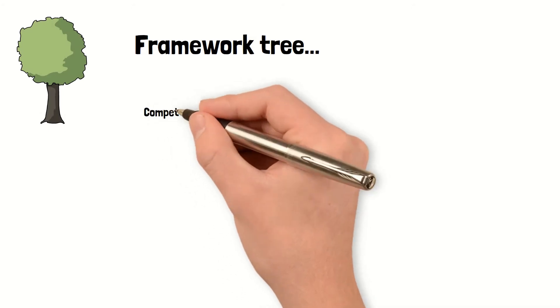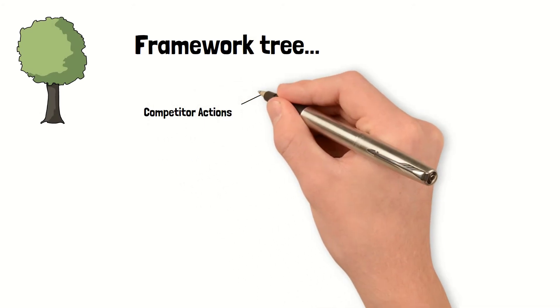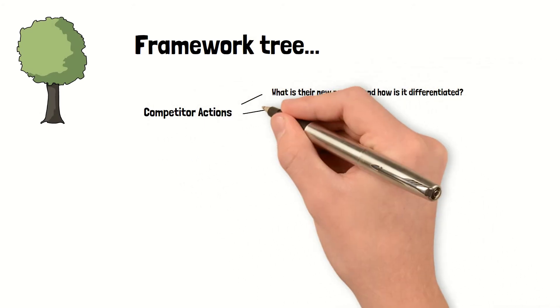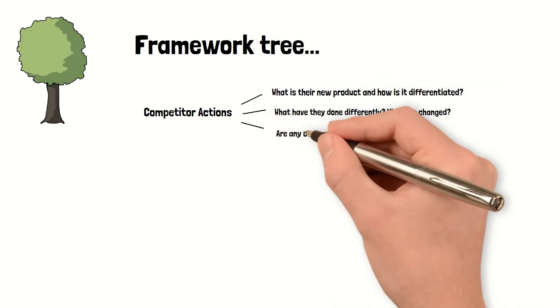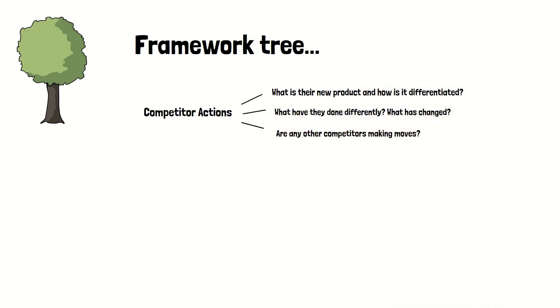We can build out a framework by first looking at the competitor's action. What is the competitor's new product, and how is it differentiated? What have they done differently, or what has changed? And are there any other competitors making moves?